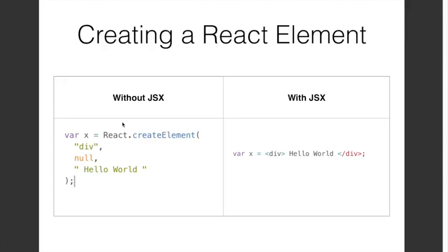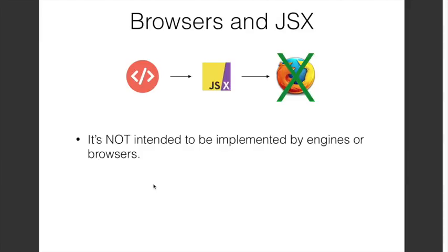Note that JSX is syntactic sugar — it's just providing a new way of writing code that provides the same functionality. So the code on the right-hand side looks simpler but the functionality is the same as the code on the left-hand side. JSX is an extension of JavaScript and not part of the core specification, so browsers or JavaScript engines are not expected to understand or implement JSX. Hence, if we send JSX code directly to the browser it will raise an error.